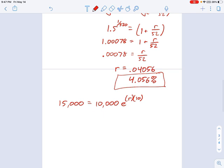So again, we're going to divide each side by 10,000. I get 1.5 = e^(10r). I'm going to take the 10th root of each side. Let's see, 1.5 to the 0.1 power—that's the 10th root—on the left, I get 1.0414, and on the right I get e^r.